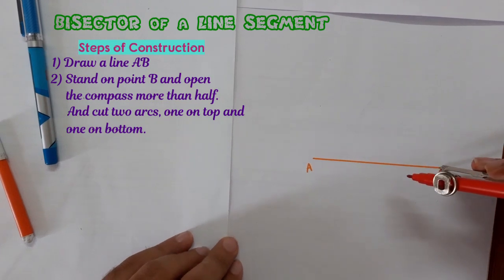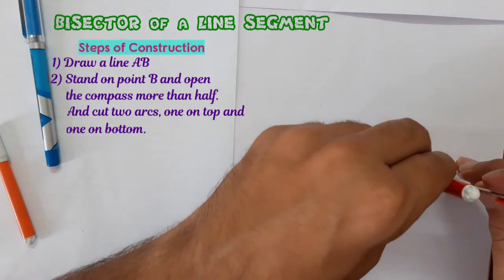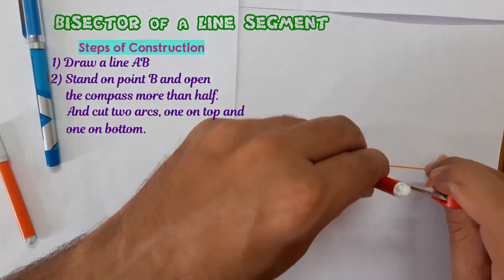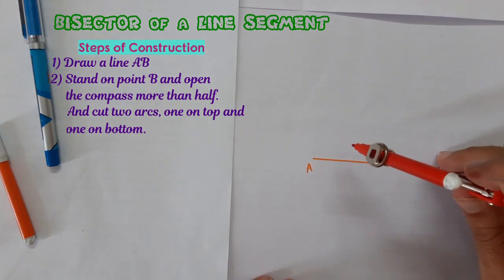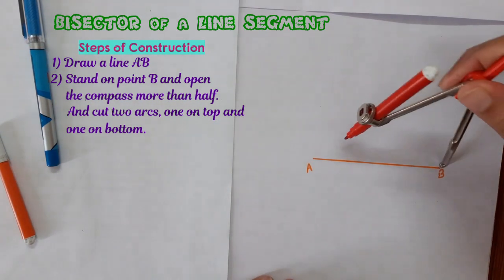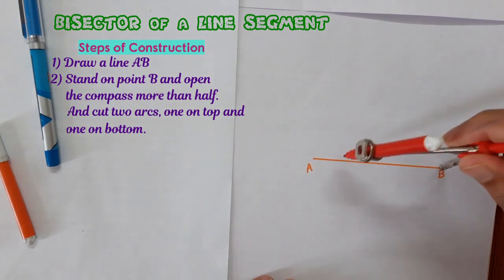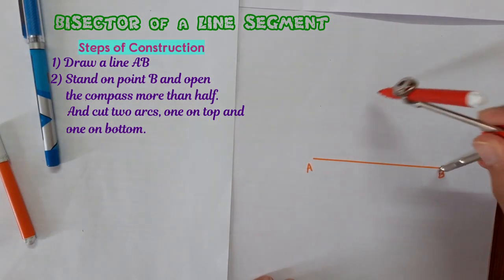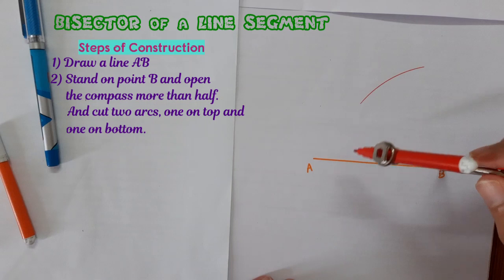Stand on one point, open the compass more than half, more than half. Okay, as you can see it's more than half or you can say close to the other point. Just draw an arc at the top and one arc at the bottom.